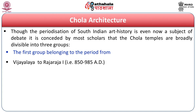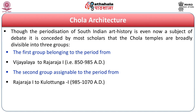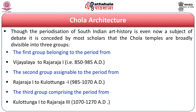Based on inscriptional evidence and chronological frameworks, Chola temples are broadly divisible into three groups. The first group belongs to the period from Vijayalaya I to Raja Raja I, ruling between 850 to 985 AD. The second group begins with Raja Raja I coming to power and goes up to Kulottunga I, from 985 AD to 1070 AD. The third group, when Chola power was declining, extends from Kulottunga I up to Kulottunga III, showing a different type of structural temples emerging.